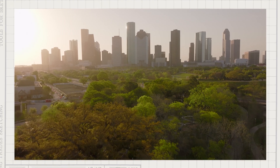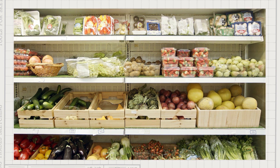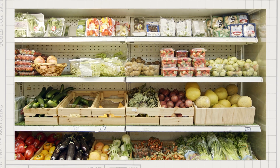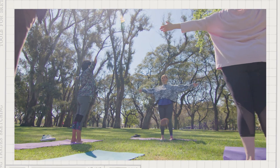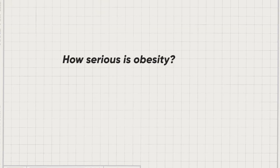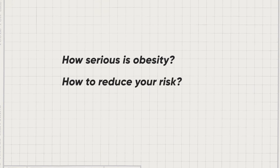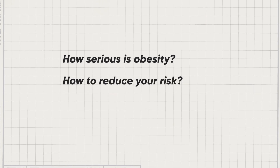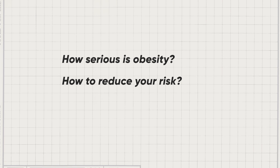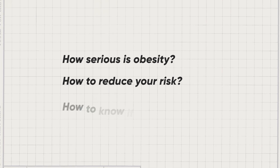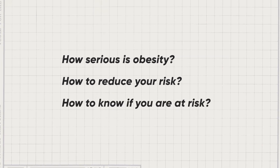Did you know that the way you live, the food systems around you, your opportunities to be active — all of this has an impact on your risk of developing obesity? How big is this issue? How can you reduce your risk of developing obesity and protect yourself? And how would you know if you're living with obesity?